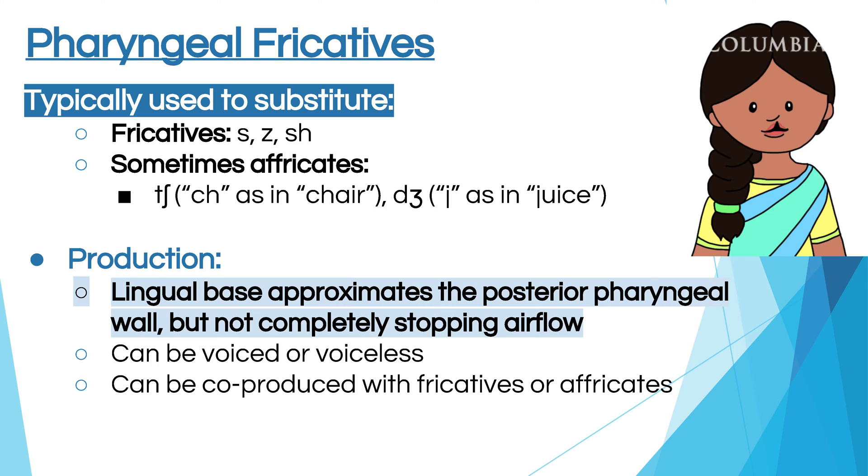When we talk about pharyngeal fricatives, we have a wonderful case study of a little six-year-old who came to us when she was five with many pharyngeal fricatives. Pharyngeal fricatives are typically used to substitute for the fricatives — s, z, and sh — and sometimes the affricates like ch in 'chair' and j in 'juice.' Your tongue base touches the posterior pharyngeal wall but doesn't completely stop the airflow. Airflow can be voiced or voiceless and can be co-produced with a fricative or an affricate.